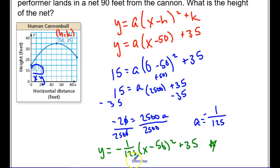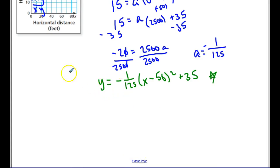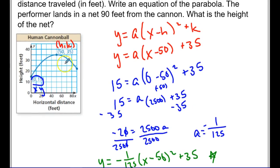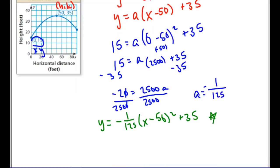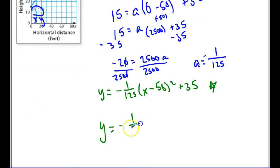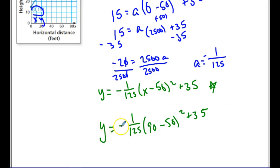Now for the second part: the performer lands in a net 90 feet from the cannon — what is the height of the net? The horizontal distance is my x, so I plug in x = 90 into the equation. Once you plug that into your calculator, you find that y is approximately 22 feet. I just used the x-value given to find my y-value from the equation.